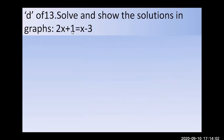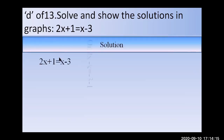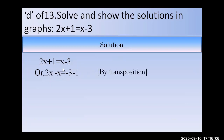Question 13: Given 2x + 1 = x − 3, we have to solve and show the solution on a graph. First, solve algebraically. Take x to the left side and constants to the right: 2x − x = −3 − 1, so x = −4. The required solution is x = −4.